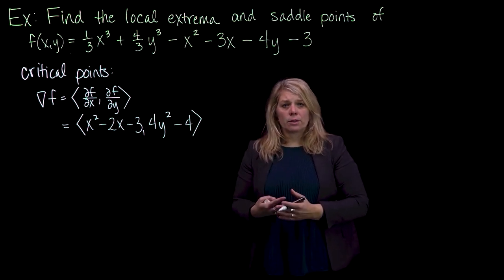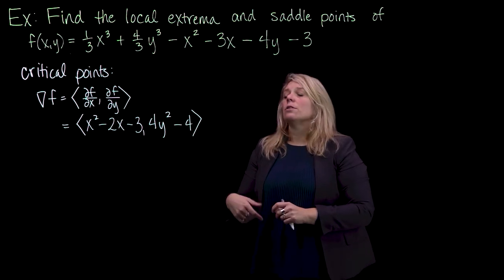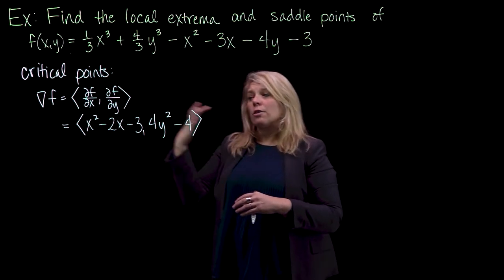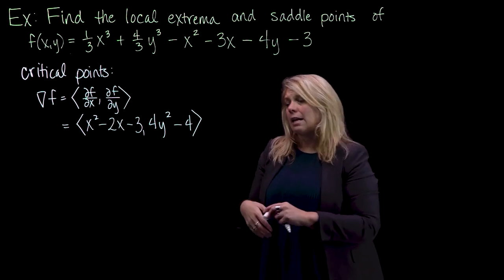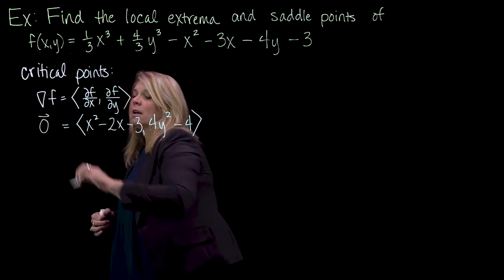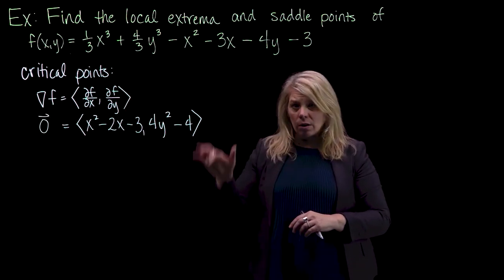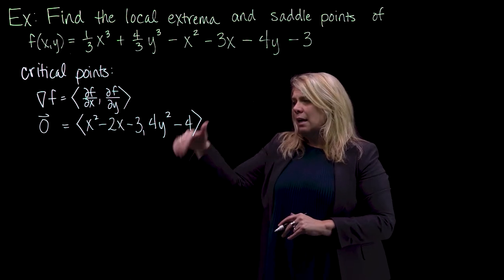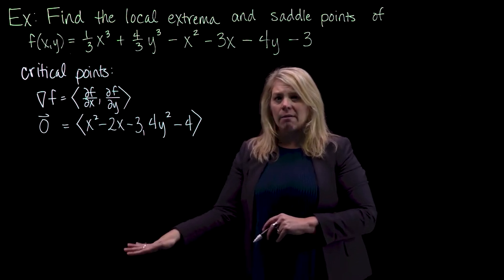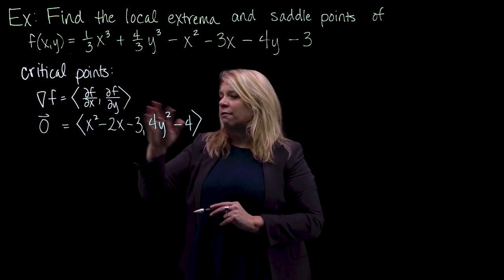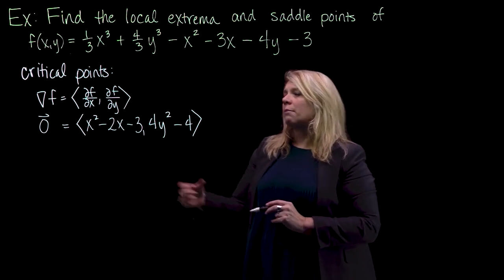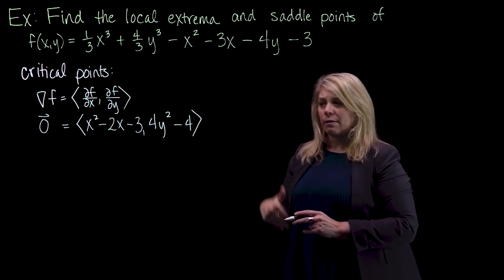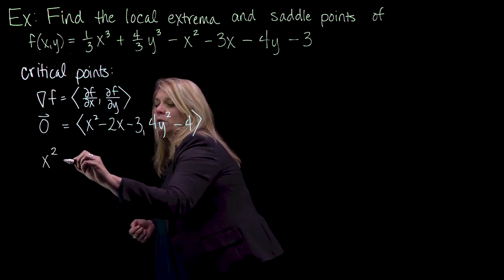What we're interested in is when this gradient vector is zero or does not exist. Since we started with a polynomial function, that function is differentiable everywhere, so there are no places where our derivative would not exist. We're really just looking for where the derivative is the zero vector. Setting the gradient equal to zero means setting each partial derivative equal to zero. In the next example, we'll just start with that step.